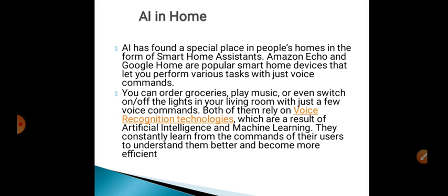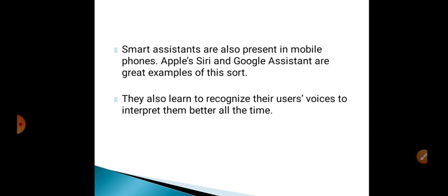AI has found a special place in people's homes in the form of smart home assistants. Amazon Echo and Google Home are popular smart home devices that let you perform various tasks with just voice commands — you can order groceries, play music, or switch on the lights in your living room. Both rely on voice recognition technologies which are a result of artificial intelligence and machine learning, and they constantly learn from user commands to become more efficient.